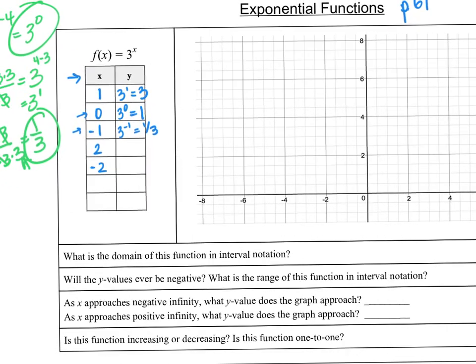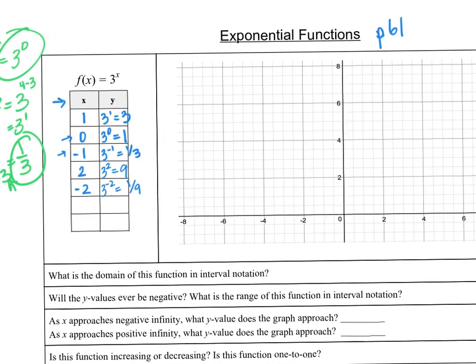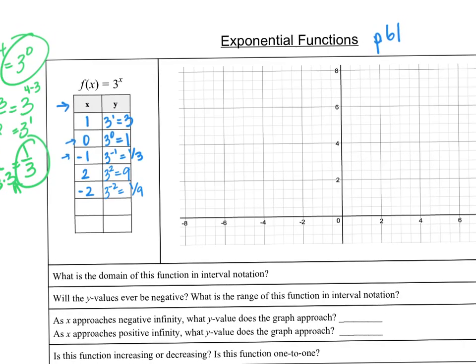Continuing with our table: 3 to the 2nd power is 9. 3 to the negative 2 is like dividing by two of those 3s, so that becomes 1 ninth. There's some more room on the table, but let's try and plot it since we've kind of seen this function before.